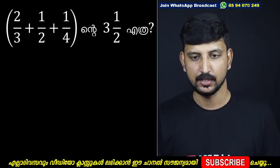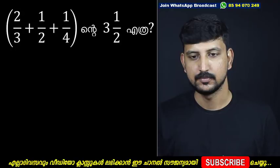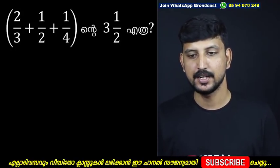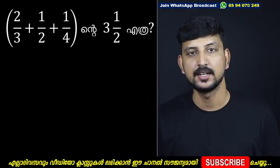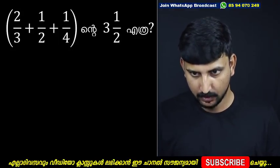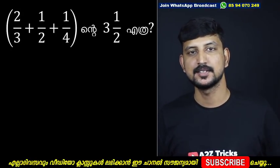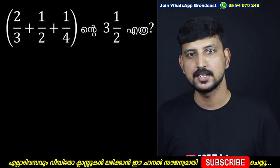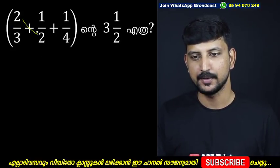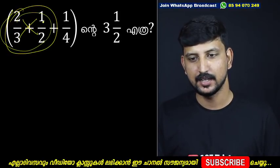It is the second one. The second question is: 2 by 3 plus 1 by 2 plus 1 by 4. Then 3 by 2. So we have 2/3, 1/2, and 1/4. We are crossing two. Now let's do this as the last one.